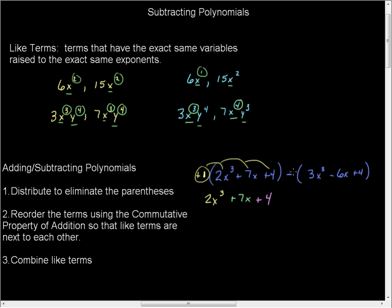In the next one, you have to be very careful in subtraction. This is a negative 1 that gets distributed. And it gets distributed to all of them.